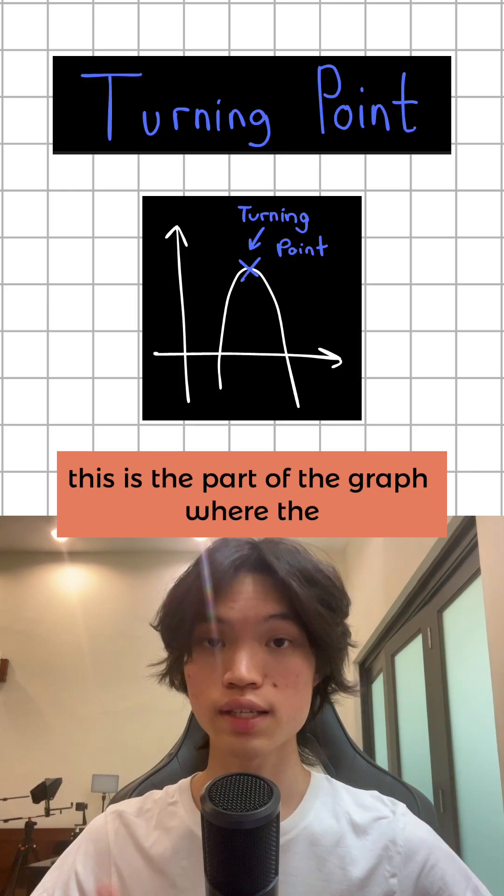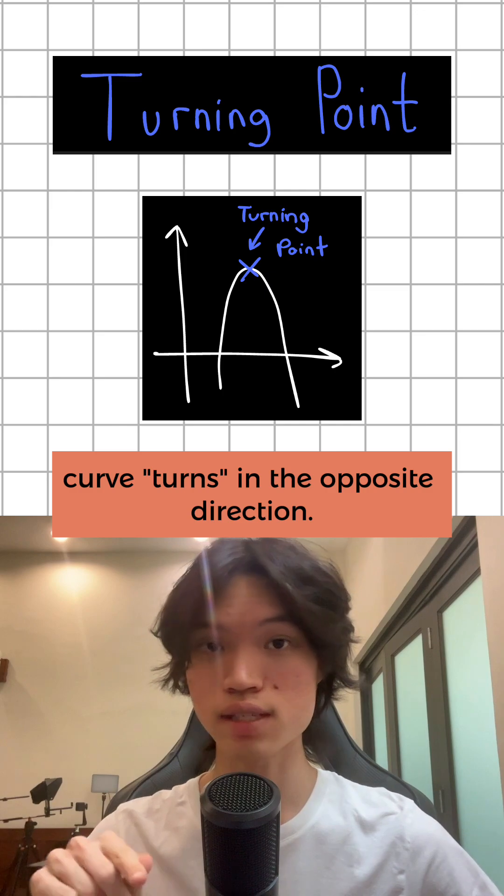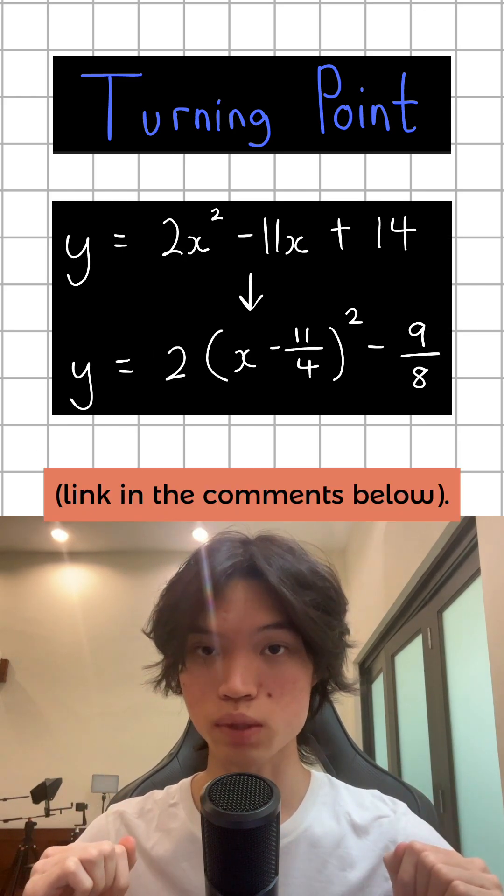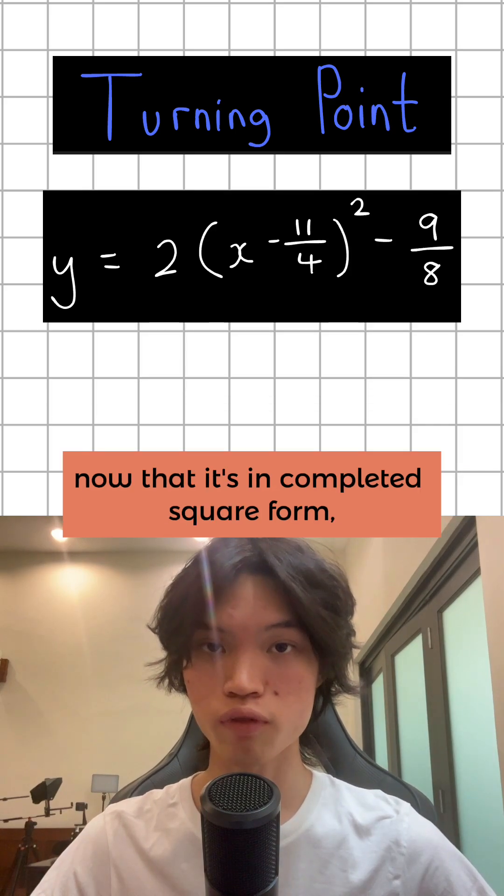T stands for turning point. This is the part of the graph where the curve turns in the opposite direction. Here I'll have to complete the square for the expression, link in the comments below. Now that it's in completed square form...